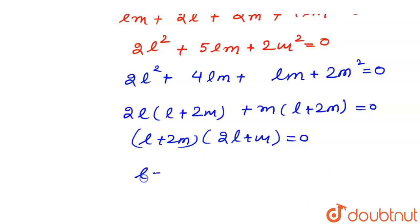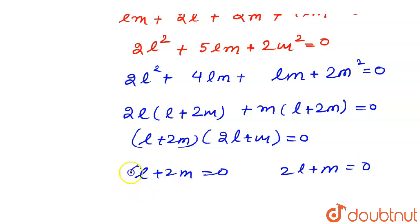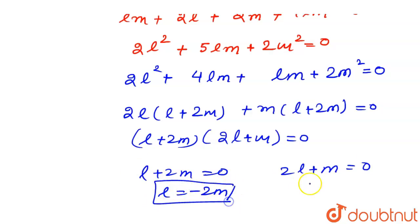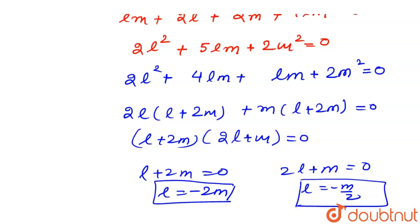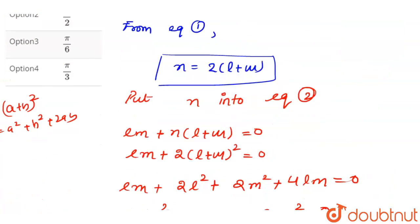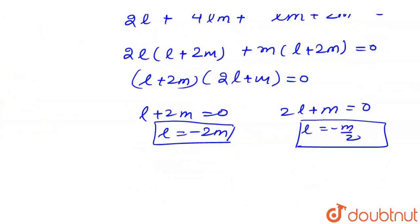From this equation of roots, we get l + 2m = 0 and 2l + m = 0. Since the variable is l, we get l = −2m from the first factor and l = −m/2 from the second factor.